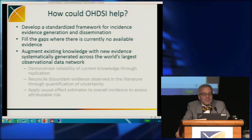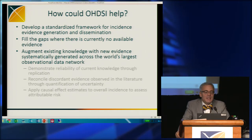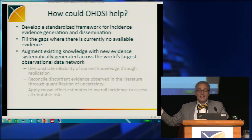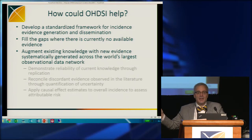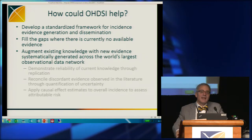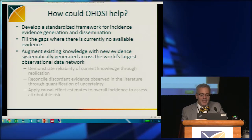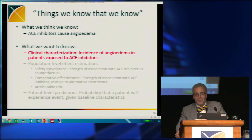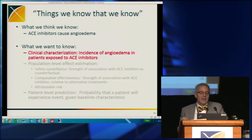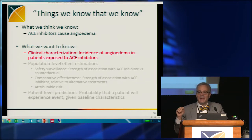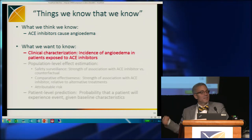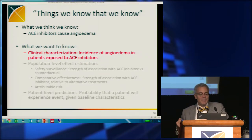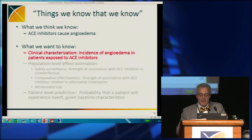How can OHDSI help? Well, first we can develop the standardized framework for how one should do incidence generation and dissemination. Then we're going to look at the network and first verify that that's a reasonable framework, second fill in the gaps where there's no evidence, and third, where there is evidence, see if we can verify it and help it do a better job at uncovering uncertainty. So we know that ACE inhibitors cause angioedema, and we worry about it. What we want to know — and shown in red is what we're doing here today — is the incidence of angioedema after people taking ACE inhibitors, without knowing whether the ACE inhibitor caused it. The next step, not shown today, is population-level effect estimation — that is, what's the attributable risk. And the third one is patient-level prediction.